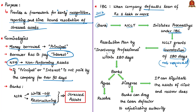Within the 180 days, an insolvency professional will make a resolution plan, which could include concessions in interest rates or the principal amount, or extending the time duration for repayment, among other measures. If 75% of the creditors agree with the resolution plan, it will be put into action. Otherwise, the insolvency professional will liquidate or sell the assets of the client to recover the dues.